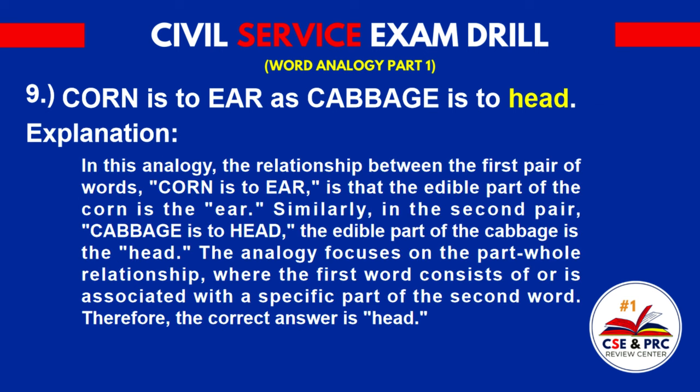Explanation: In this analogy, the relationship between the first pair of words — 'corn' is to 'ear' — is that the edible part of the corn is the ear. Similarly, in the second pair, 'cabbage' is to 'head' — the edible part of the cabbage is the head. The analogy focuses on the part-whole relationship, where the first word is associated with a specific part of the second word. Therefore, the correct answer is 'head.'